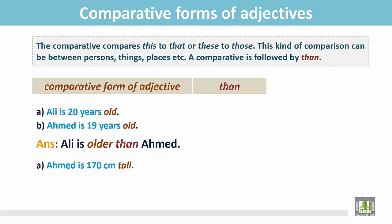Another example. Ahmed is 170 cm tall. Hassan is 165 cm tall. In these two sentences, we see they are not of the same height. One is 170 and another is 165 cm tall.